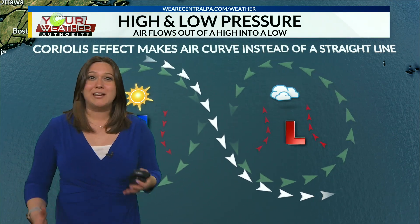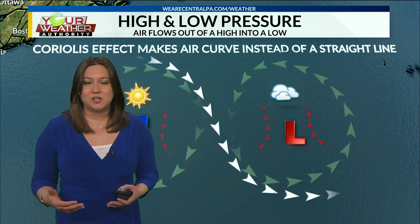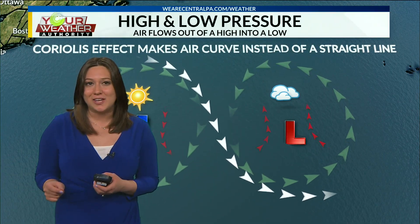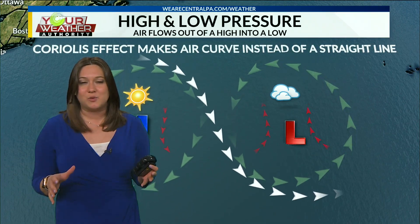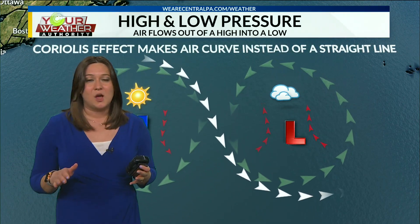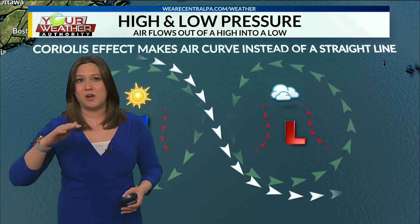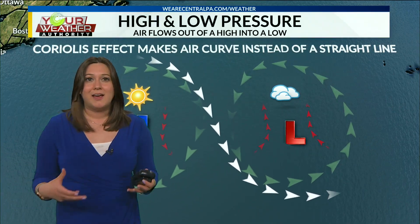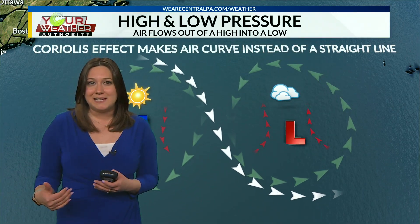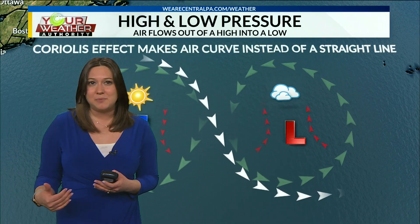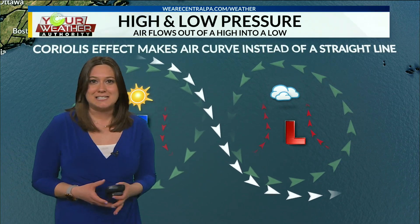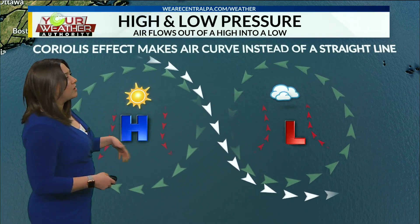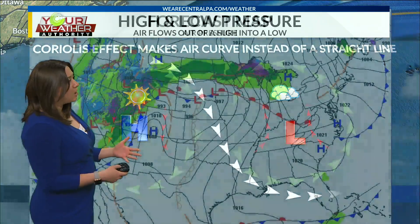We get these pressure differences because the sun does not heat the Earth evenly. It heats at different rates — we've got higher mountains and areas down to sea level, so the air is being heated at different temperatures. With those differences in temperature and density, you get different pressures, which creates our weather and creates our wind.